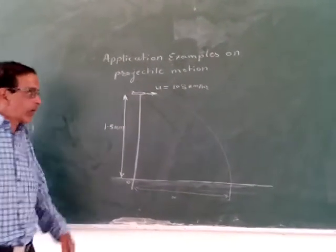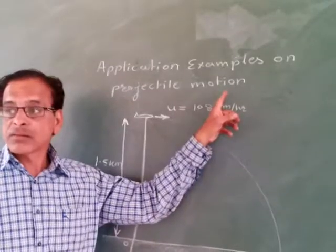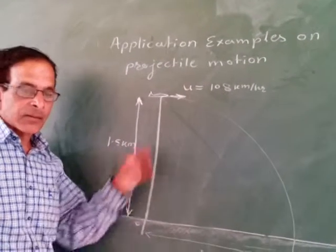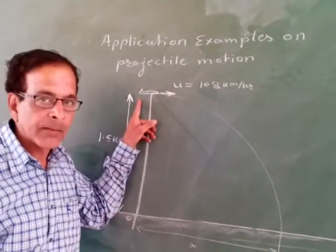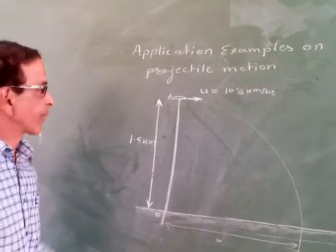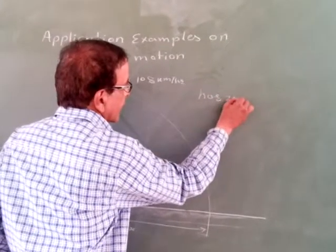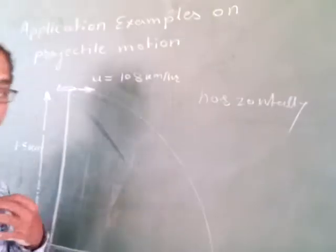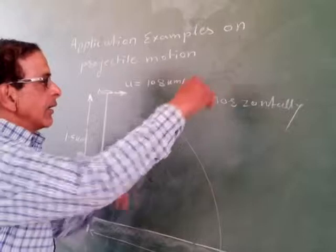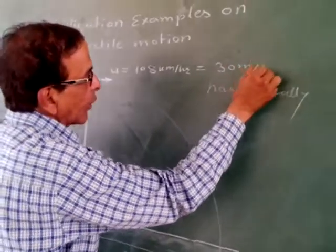Application example on projectile motion. A vital claim (aircraft) is moving horizontally — the word horizontal is very important here. The vital claim is moving horizontally with a velocity of 108 kilometers per hour, which equals 30 meters per second after conversion.